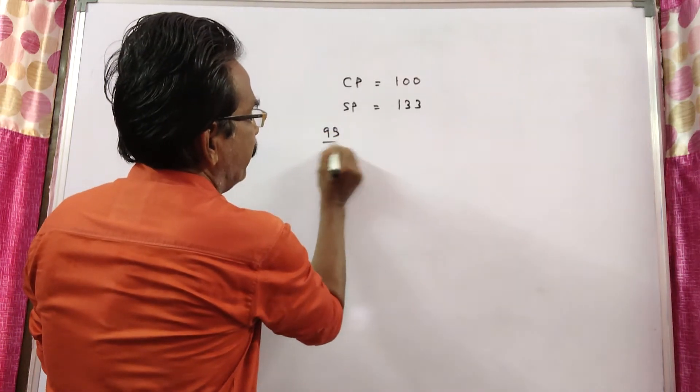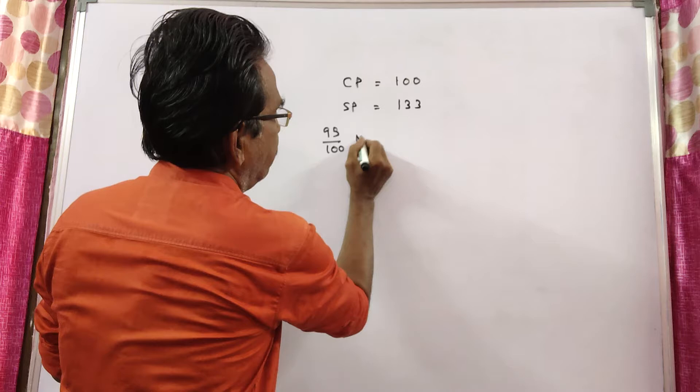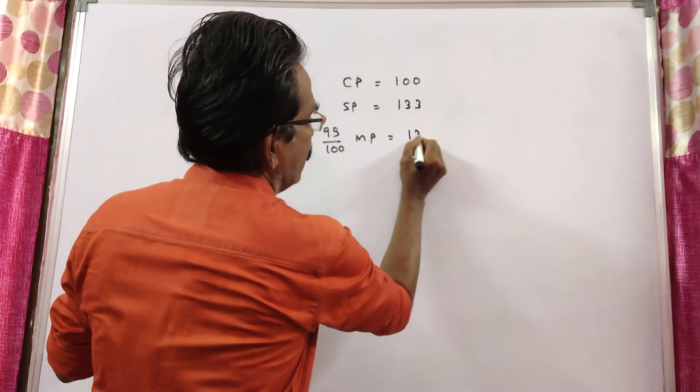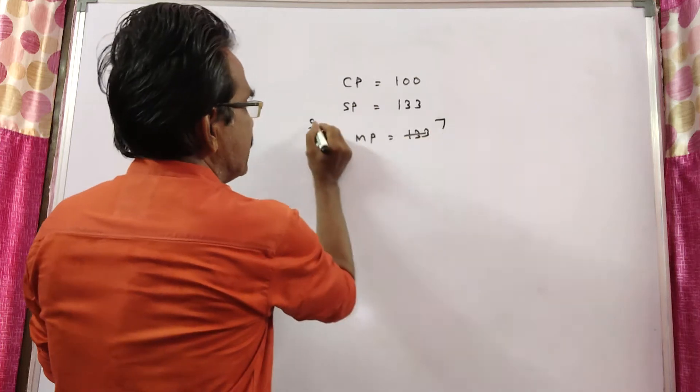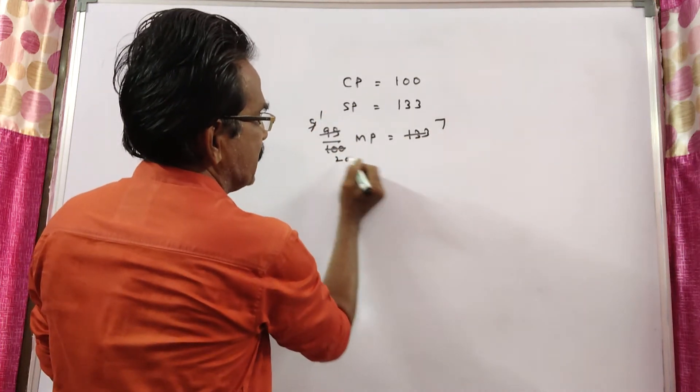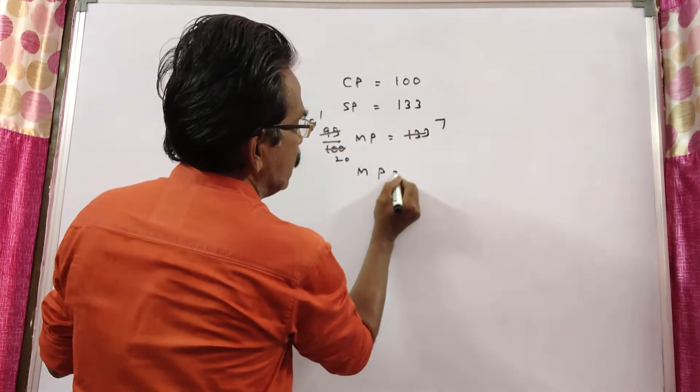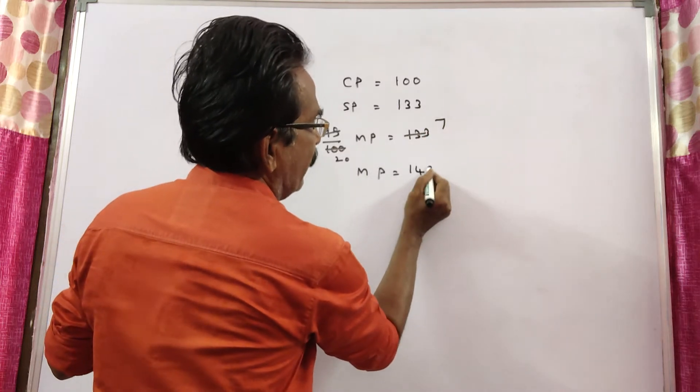95% of market price is equal to 133. [performing division] Market price is equal to 140.